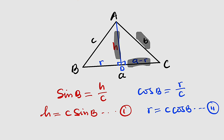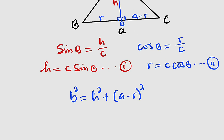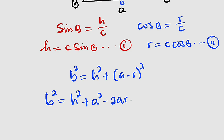Now I would like to relate h, a minus r, and b using the Pythagorean theorem. The hypotenuse squared is b squared, so b squared equals h squared plus (a minus r) whole squared. Expanding this gives b squared equals h squared plus a squared minus 2ar plus r squared. This is our equation number three.